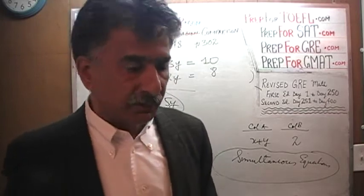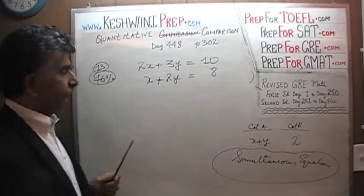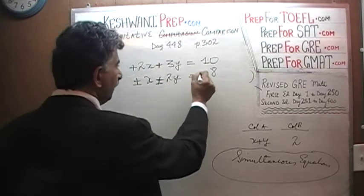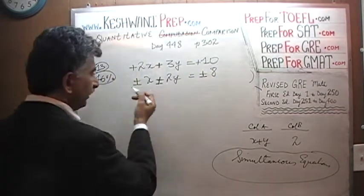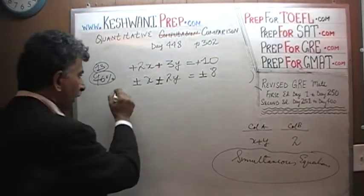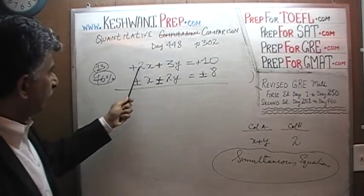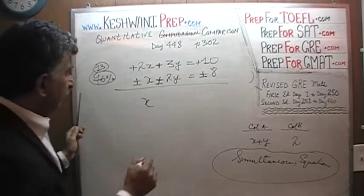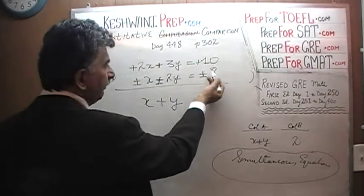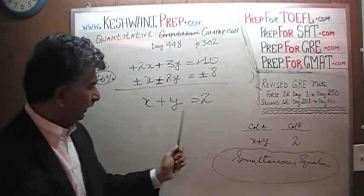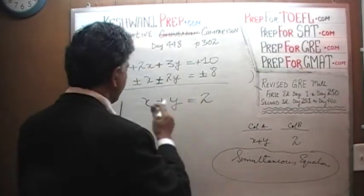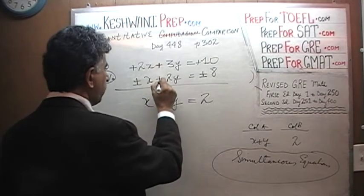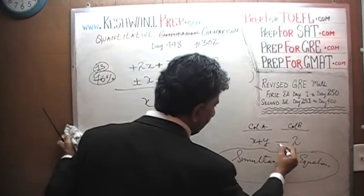The next thing to do is subtract the bottom equation from the top. Change the sign of each term in the bottom equation, then add. 2x minus x is x, and 3y minus 2y is y. So we get x plus y. And then 10 minus 8 is 2. Voilà — x plus y equals 2. The answer is C.